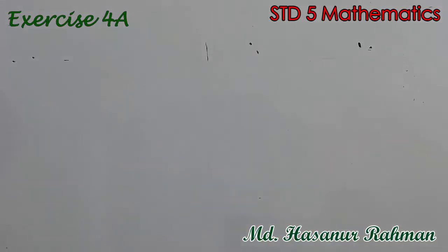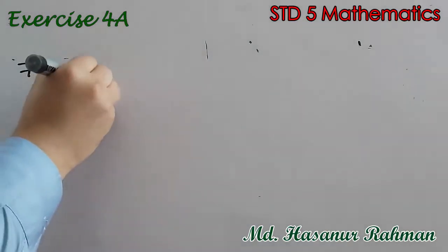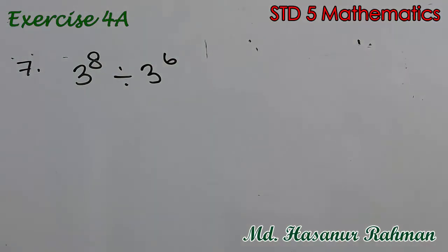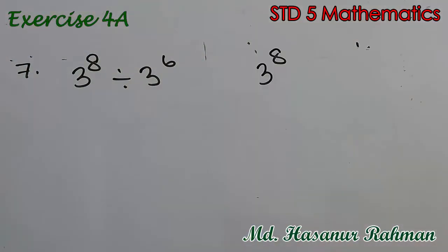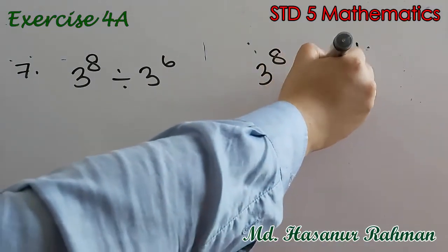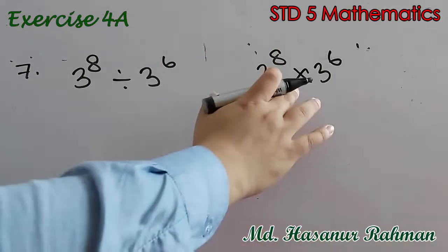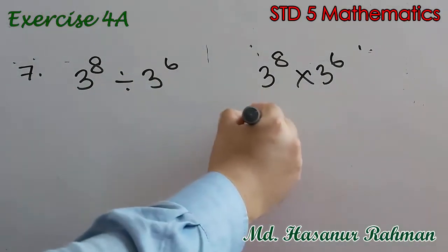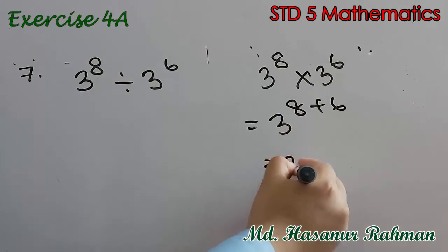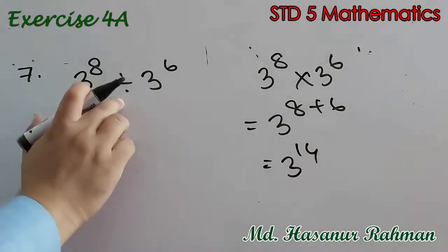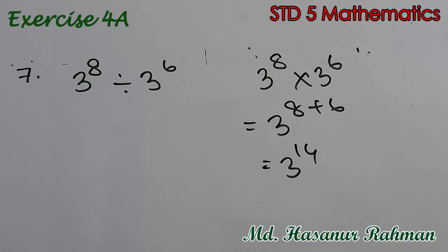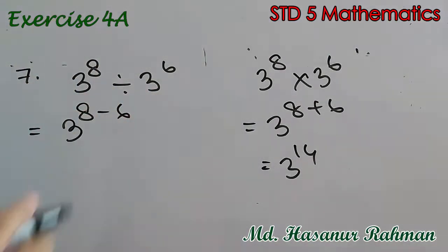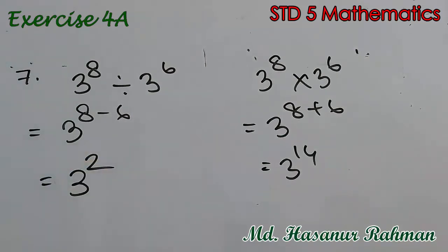Now number 7 says 3 to the power 8 divided by 3 to the power 6. Remember, if we had 3 to the power 8 into 3 to the power 6 — same base with a multiplication sign — we add the powers: 8 plus 6 gives 3 to the power 14. But when there is a division sign, we subtract the power: 3 to the power 8 minus 6, that is 3 to the power 2, which means 3 squared.